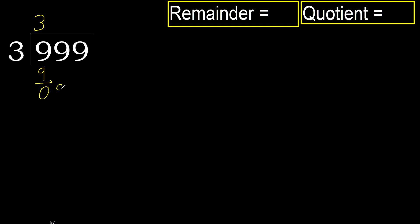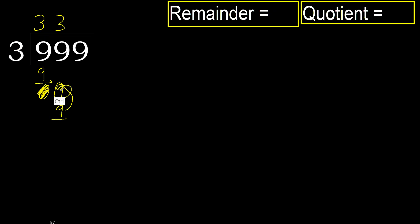Next, bring down. 9. 3 multiplied by 3 is 9, which is not greater. Subtract.